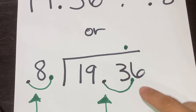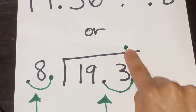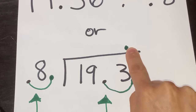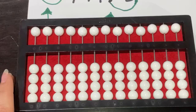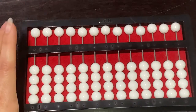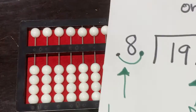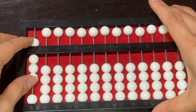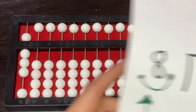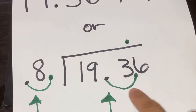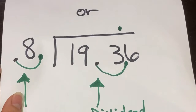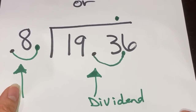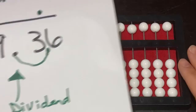One more thing: in my quotient, my answer, there's going to be only one decimal point that I'm going to have to count, and we'll see this shortly. Let's set up — the divisor always goes on the left-hand side, so that's 8. My dividend, which is 193.6, goes on the right-hand side.